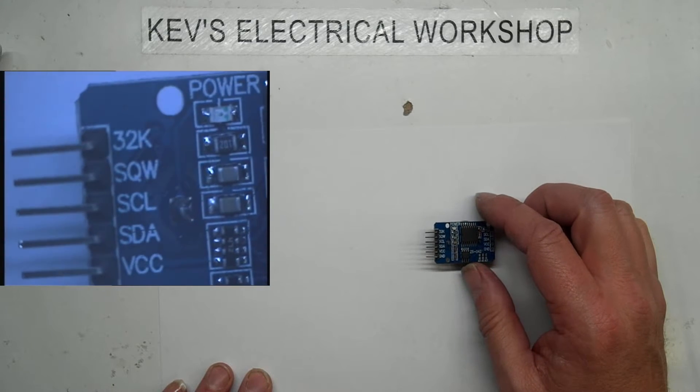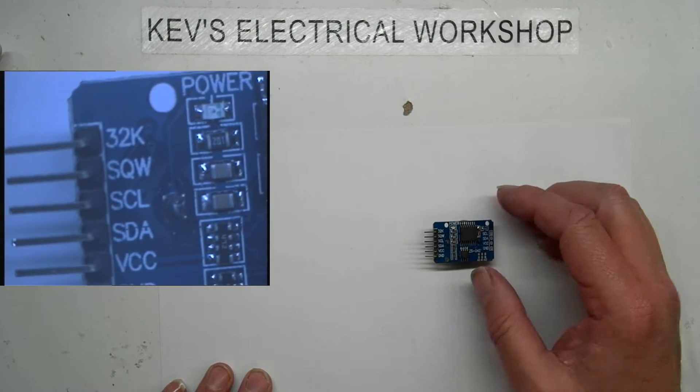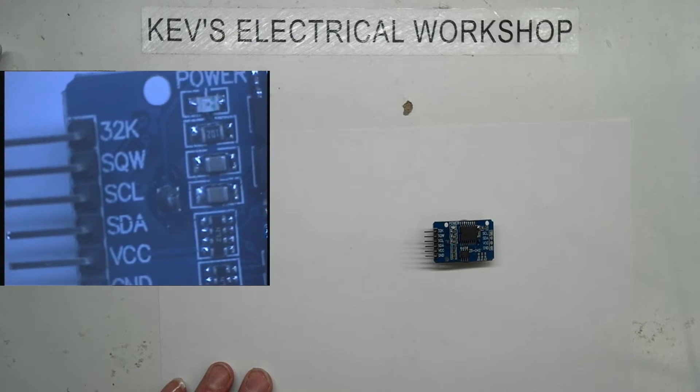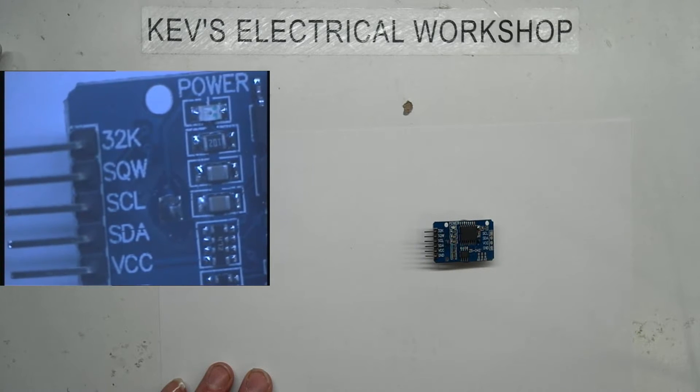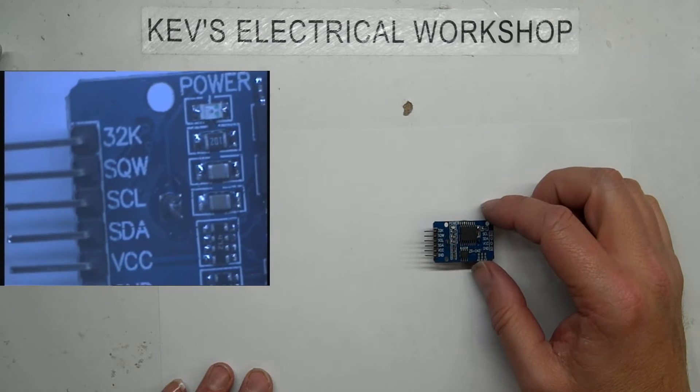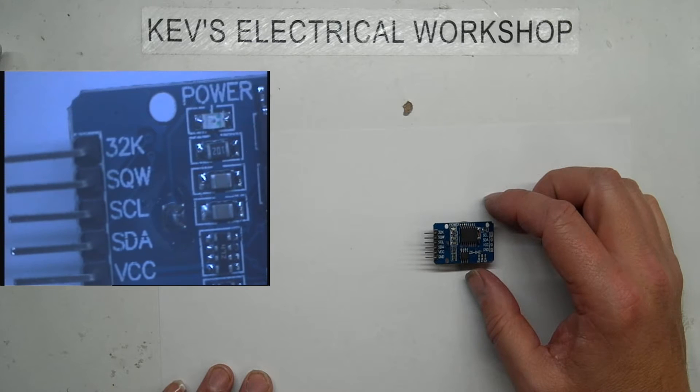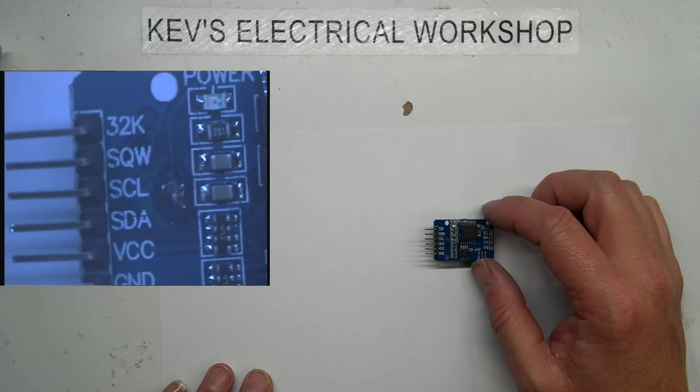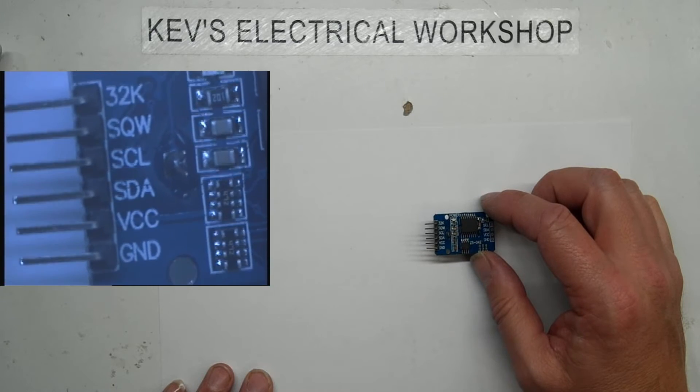I believe the 32k, I think you can actually daisy chain the EEPROMs. I think you can have up to 15 so you can have quite a lot of storage there which obviously stays once you turn the power off.